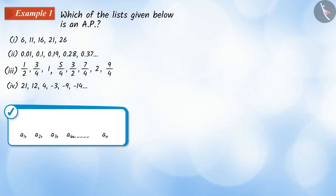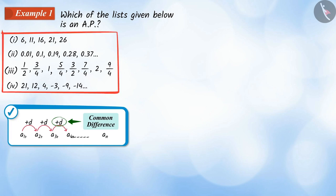We learned in the previous video that in an AP, except for the first term, each term is found by adding a certain number, that is, the common difference D, to its previous term. Therefore, the list in which any two consecutive terms will have the same difference will be an AP.